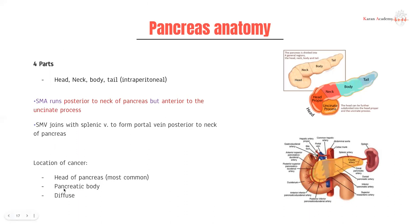Briefly touching on pancreatic anatomy: we have the tail, the body, the neck, and the head, which is broadly composed of the head proper and the uncinate process. The pancreas is highly vascular, very close to the IVC, aorta, duodenum, and spleen. Because of this, the potential for metastatic spread is very high, and surgical approaches are quite limited.